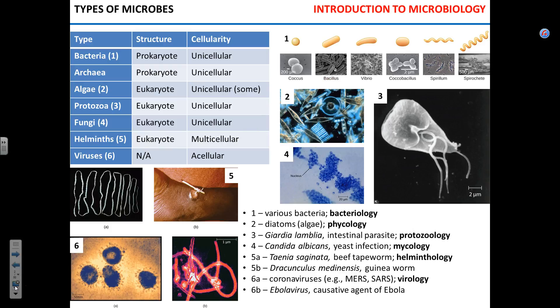Now, what are the types of microbes? Bacteria and archaea look quite similar - they are prokaryotic. What does prokaryotic mean? They don't have a nucleus; they don't have membrane-bound organelles. Now, archaea and bacteria look very similar but it turns out they are remarkably different, and we'll chat about that.